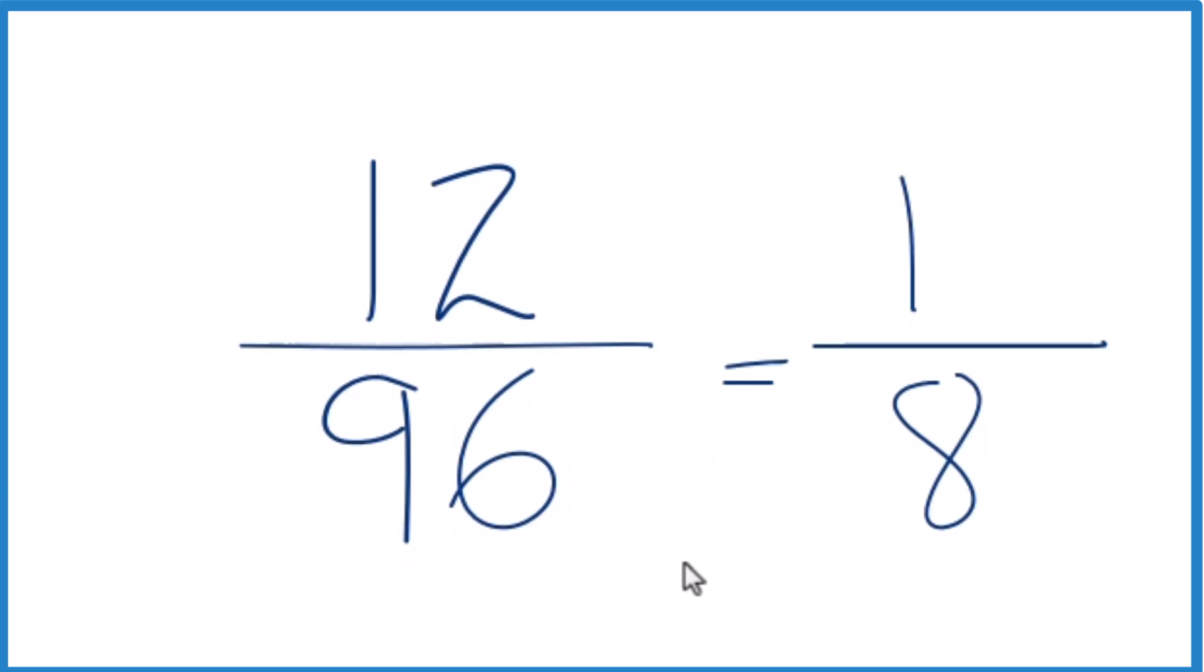There is another way you could do that if you didn't know that 12 went into 96 eight times. You could, because these are both even, divide each by 2. So 12 divided by 2 is 6, 96 divided by 2 is 48.